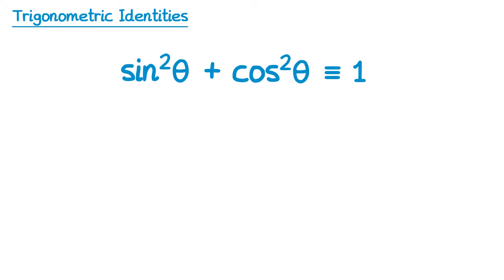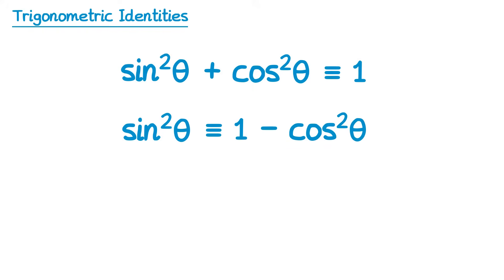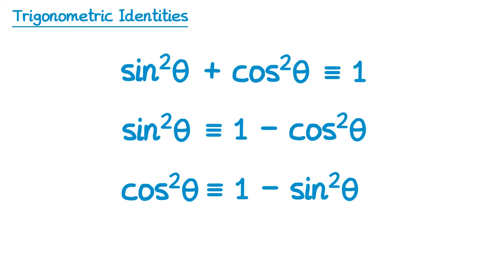This identity can be written in two other ways that are often more useful. First, subtracting cos squared theta from both sides gives sine squared theta ≡ 1 minus cos squared theta. Also, subtracting sine squared theta from both sides gives cos squared theta ≡ 1 minus sine squared theta. Sometimes these rearrangements are more useful in questions.